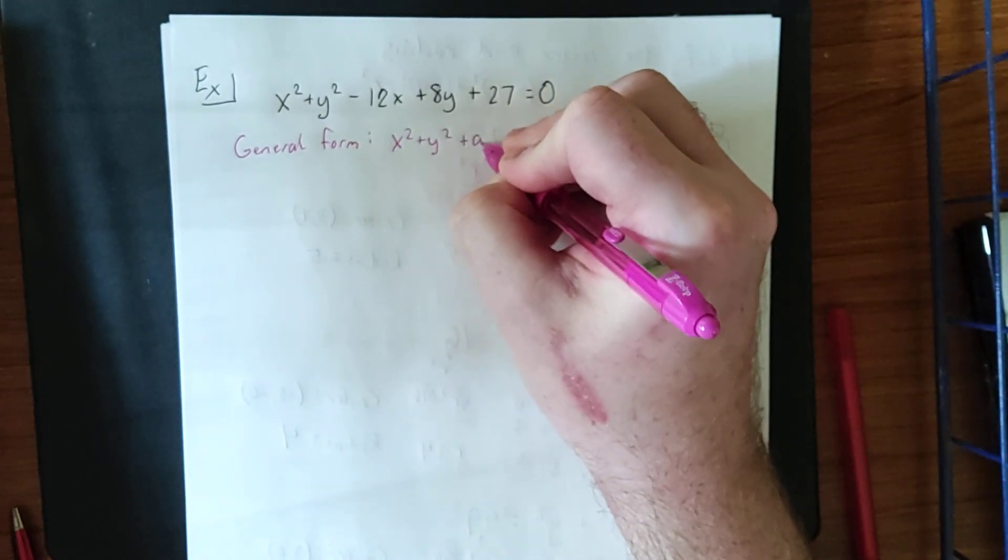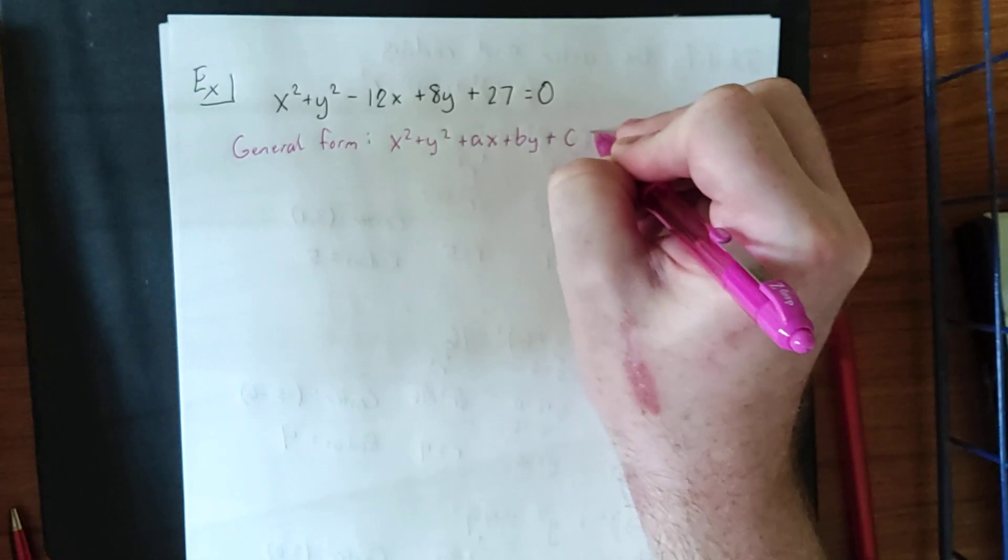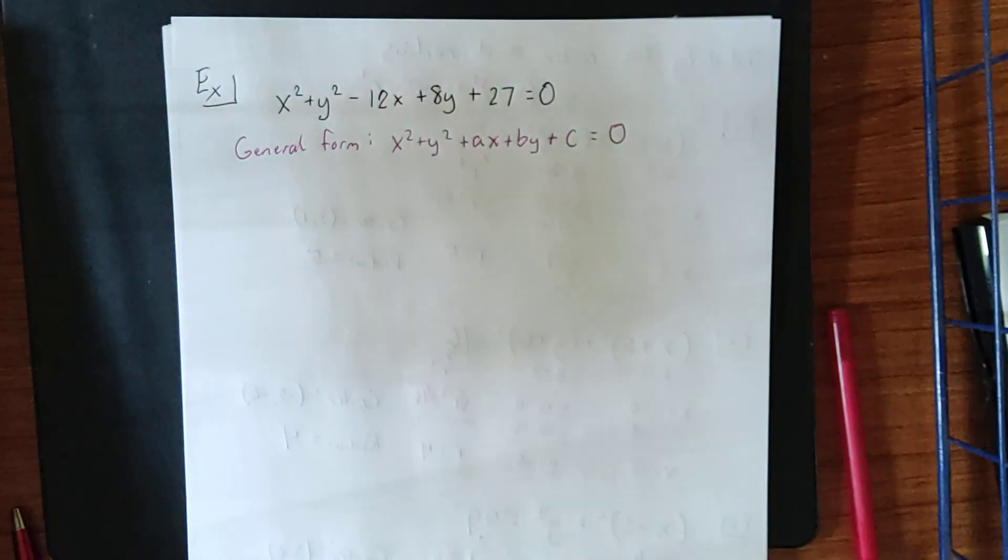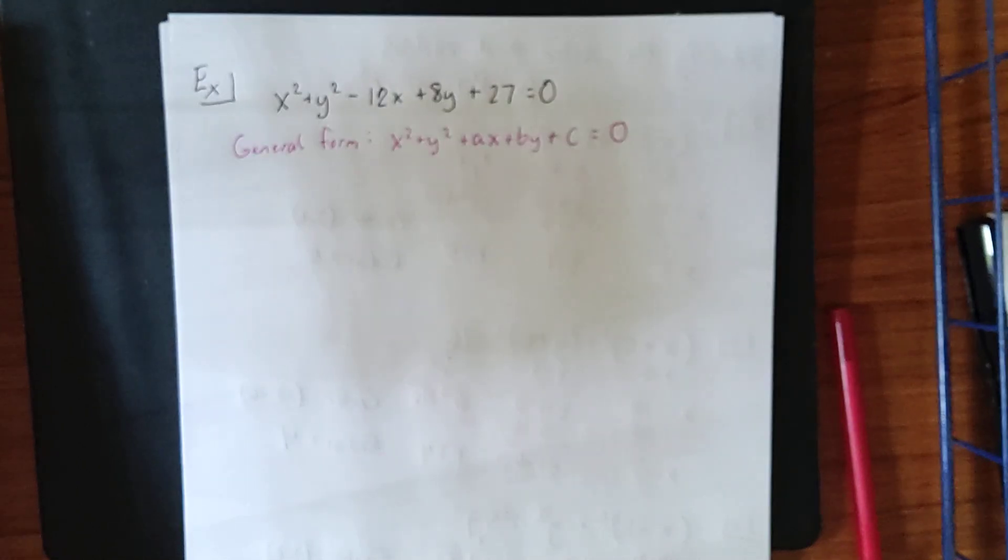You would get an x squared term. You'd have a y squared term. You'd have an x term. You'd have a y term. And you would have a constant term. When you put all of those together, this is what you get.